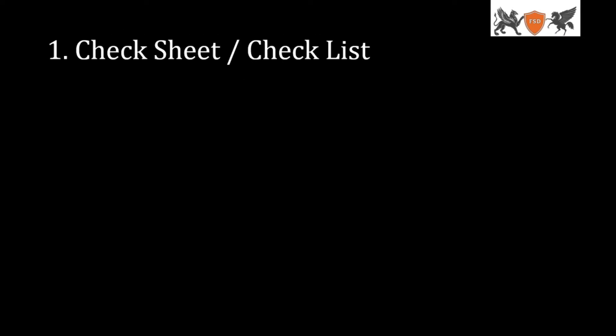First one is Check Sheet or Checklist. If we want to purchase a product or a material, we will check what we want against a Check Sheet or Checklist. This is how simple it is.